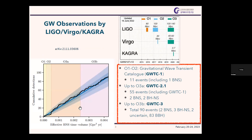Gravitational wave observations started in 2015, and right after the beginning of the first observing run, we detected one black hole binary. Many gravitational wave sources have since been discovered by ground-based detectors. The first observing run started in 2015 and lasted until early 2016. The second observing run started in late 2016 and ended in August 2017. The third observing run started in 2019 and ended a little earlier than scheduled because of the COVID outbreak.